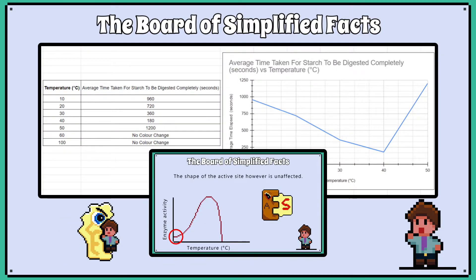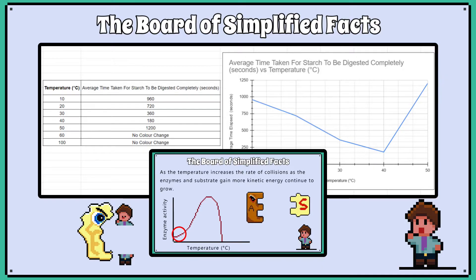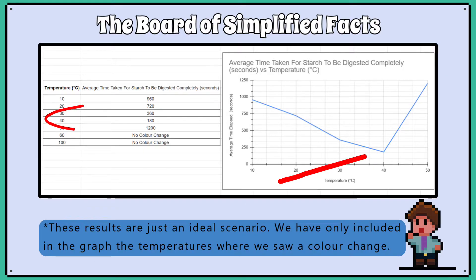If you are not sure how to explain the biology behind these data, then please watch the previous video on enzymes. The results show that 40 degrees Celsius is the optimum temperature for this enzyme, as it took the least amount of time to break down all the starch into glucose and produce a negative starch test.